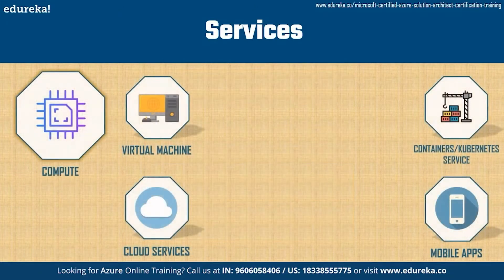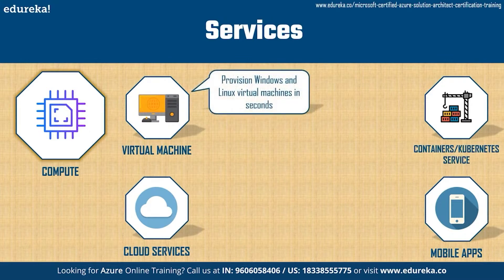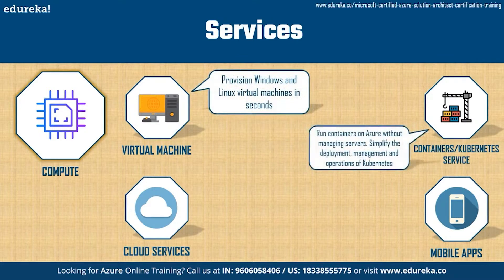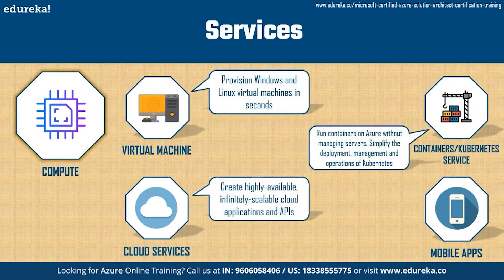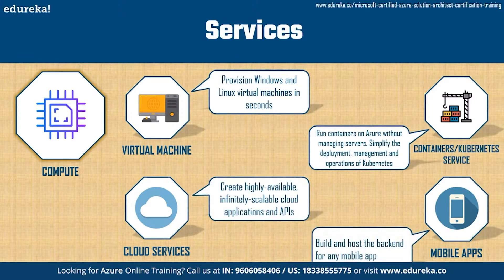The first product John needs to build his cloud infrastructure is Compute. He can use this to deploy and manage virtual machines, containers, and batch jobs, as well as support remote application access. Compute resources can be configured with either public or private IP addresses depending on whether the resource needs to be accessible to the outside world. Some services within the Compute product include virtual machines, containers, Kubernetes service, cloud services, and mobile apps.